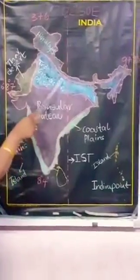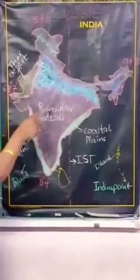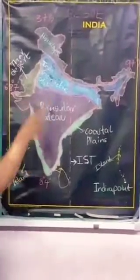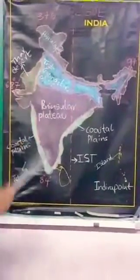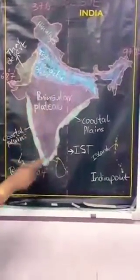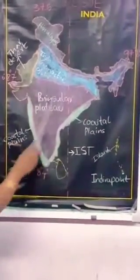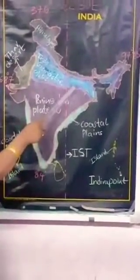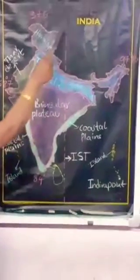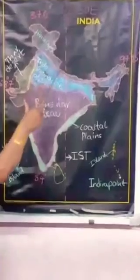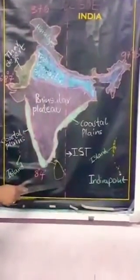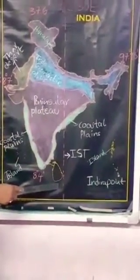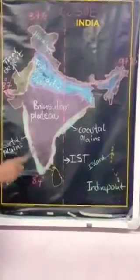The 82 degrees 30 minutes East longitude passes near Uttar Pradesh, and in Andhra Pradesh it passes near Kakinada. The whole country follows the same time, so our Indian Standard Time is 82 degrees 30 minutes East longitude.